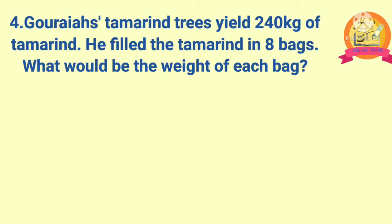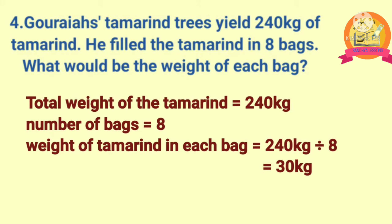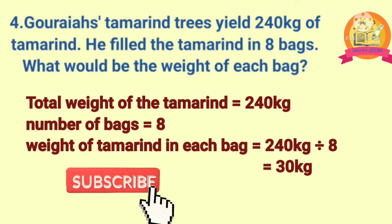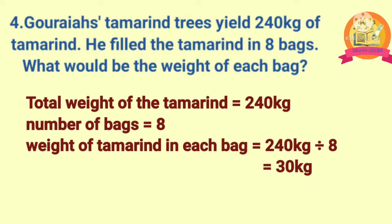Fourth problem: Gauraiya's tamarind trees yield 240 kg of tamarind. He filled the tamarind in 8 bags. What would be the weight of each bag? Solution: total weight of tamarind is 240 kg. Number of bags is 8. Weight of tamarind in each bag is 240 kg divided by 8. After dividing, we get 30 kg. Therefore, weight of tamarind in each bag is equal to 30 kg.